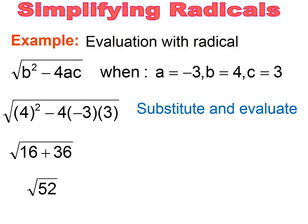So when I simplify this, I'm looking for the highest perfect square factor and the factor that's going to stay under the radical. For 52, my highest perfect square factor is 4 and the leftover is 13. 4 times 13 equals 52. I can simplify my perfect square piece, which is that 4, and it becomes 2 root 13. So this is evaluation with simplifying radicals.